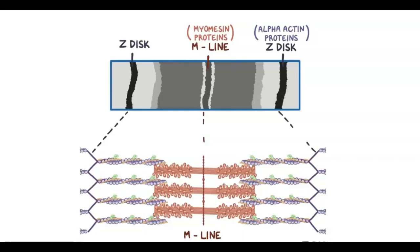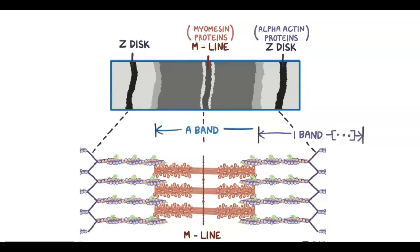For every thick filament, there are two thin filaments, one above and one below, and the two types of filaments overlap. The region with only thin filaments is called the I-band, and it appears light. Each sarcomere unit has two half I-bands at either end. The region with thick filaments is called an A-band, and it appears dark.